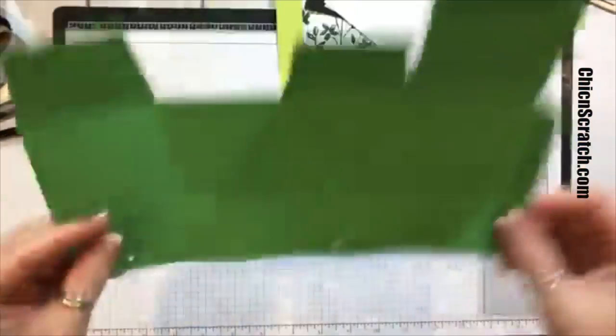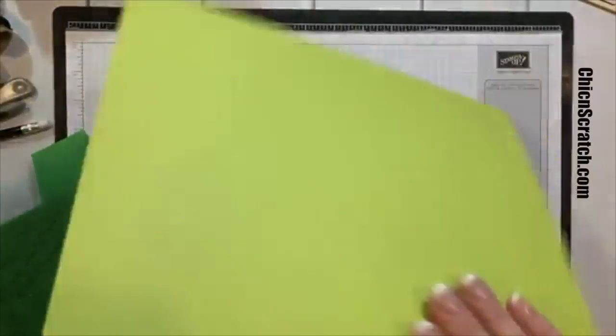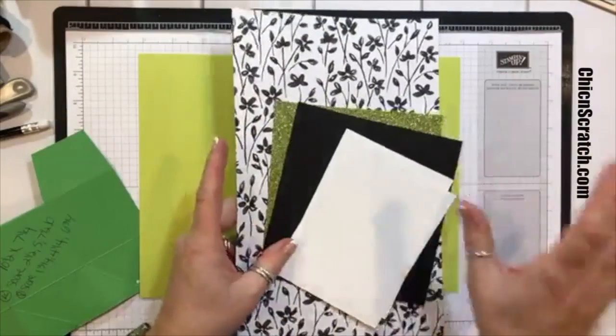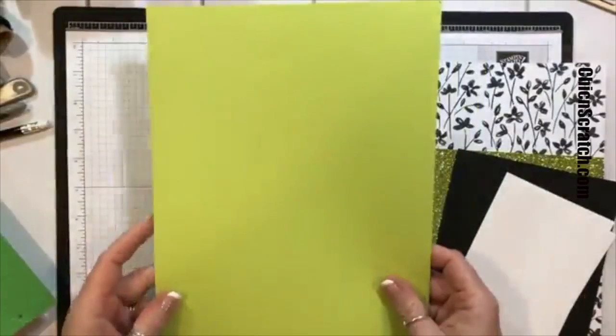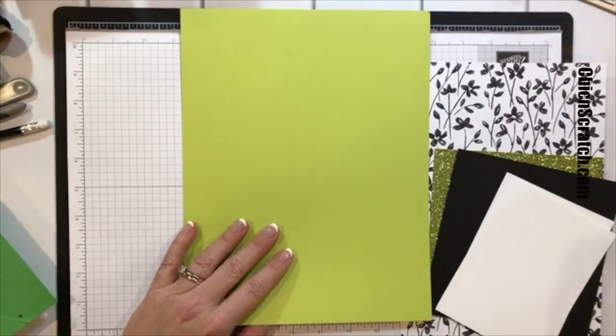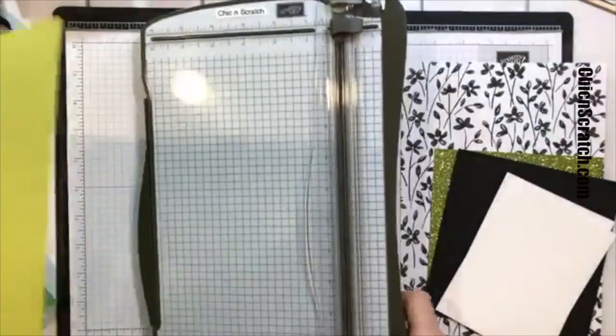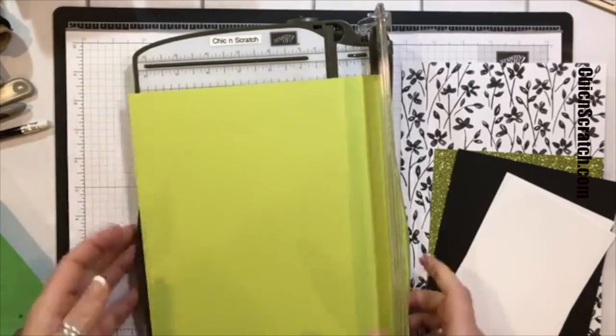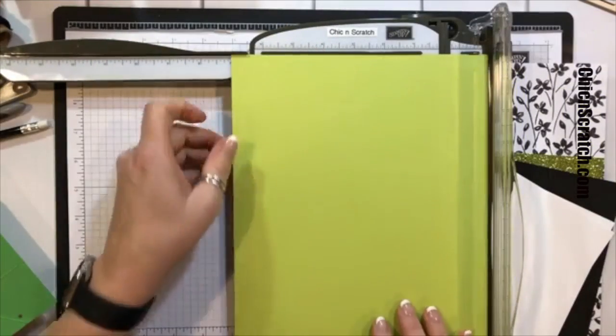I'm going to make this box with Lemon Lime Twist. I'm kind of hooked on the Petal Passion designer series paper right now, so if I'm in that mood right now then I'm just going to run with it. Oh, and I forgot to say hello to everyone!